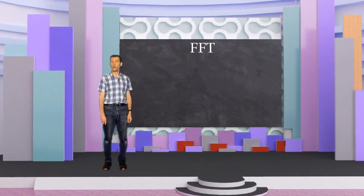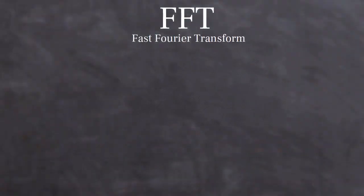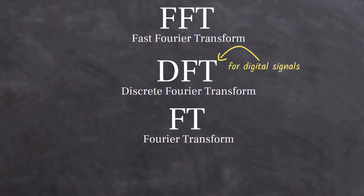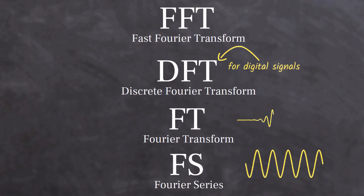The FFT or Fast Fourier Transform is simply a more efficient way of calculating the DFT or discrete Fourier Transform. The DFT is a Fourier Transform for digital signals. And the Fourier Transform itself is a development of the Fourier series, enabling it to model non-repeating signals.